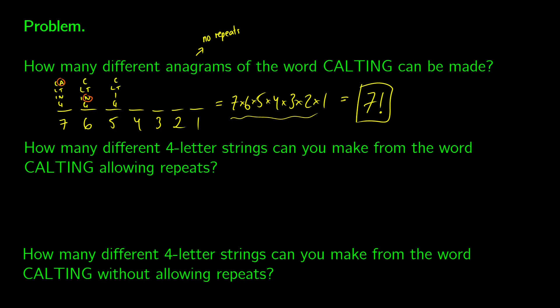So here's a different question. How many different four-letter strings can you make from the word CALTING, allowing repeats? So we need to make a four-letter string here, one, two, three, four, and we can have repeats. So we ask ourselves, how many letters do we have to choose from for the first? We have seven. Now what about the second one? Well, we can have repeats, so we also have seven choices. Third one, seven choices. We allow repeats. Fourth one, same thing. So what we get is there's seven to the four different ways of doing this.